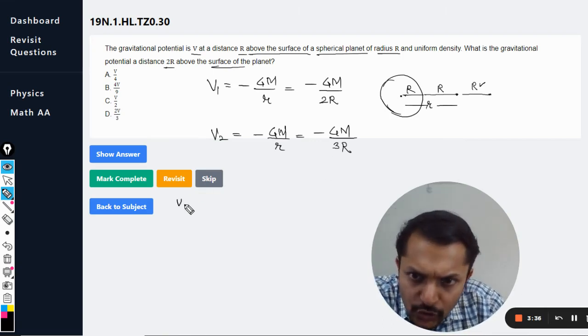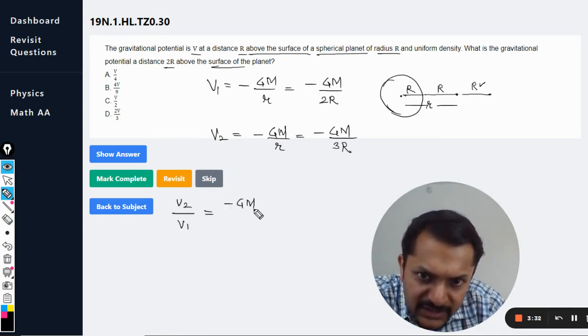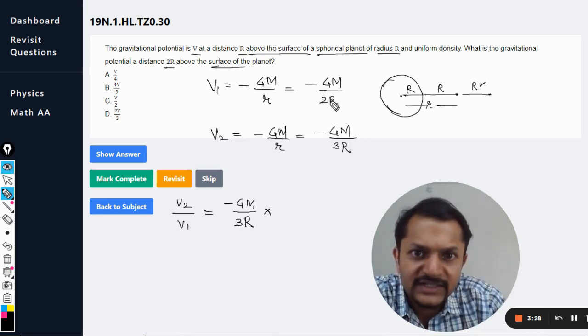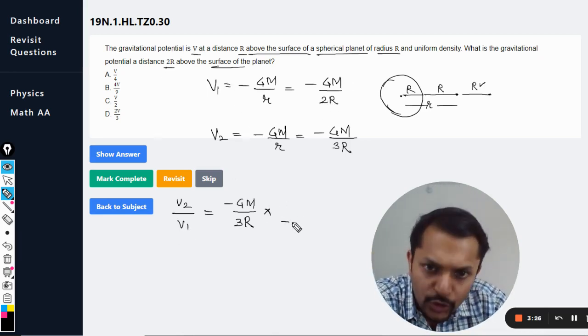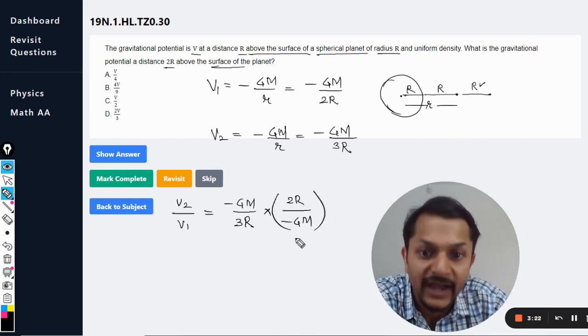So V2 divided by V1 will be minus GM divided by 3R. And V1, this thing will be done the reciprocal: minus GM into 2R, because we are technically dividing these two things.